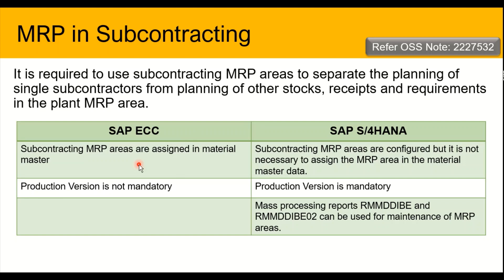In SAP ECC, the MRP areas are configured in the system and then assigned in the material master, and the production version was not made mandatory. But in SAP S4 HANA, the subcontracting MRP areas are still configured, however it is not necessary to assign them in the material master data. When you create an MRP area in configuration, the storage location configured on that MRP area will automatically manage materials into the MRP area planning for the subcontractor. It is now mandatory that a production version must be created to manage materials in the subcontracting scenario.